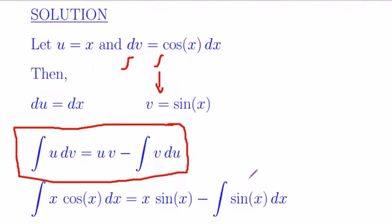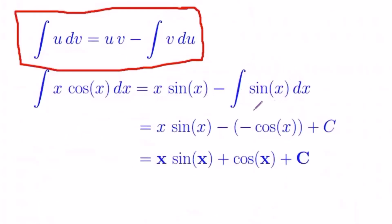v is sine x, du is dx. I can find the integration of sine x. It is negative cosine x. And this is not a definite integral, so the integration constant should be there.